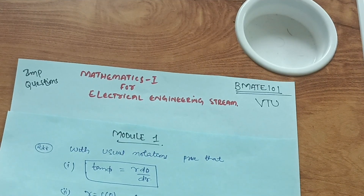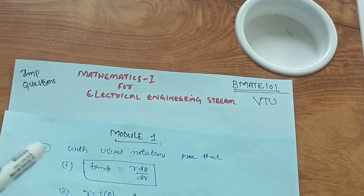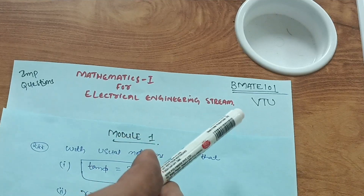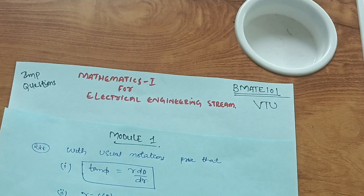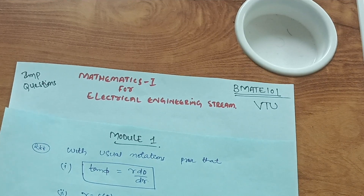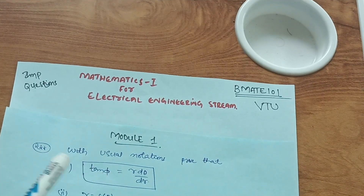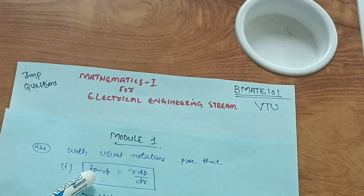Hello everyone, welcome back to my channel. Today I am covering Mathematics 1 for the electrical engineering stream, subject code BMAT 101 VTU. This is for backlog students who have a backlog in first semester maths in the electrical engineering department. Today I will discuss some important questions, so without wasting time let me start with Module 1. In Module 1, you have to focus on a particular notation which is most important as far as the VTU examination is concerned.